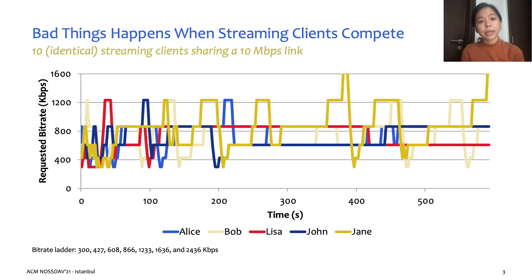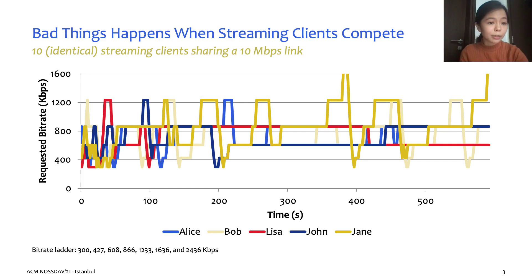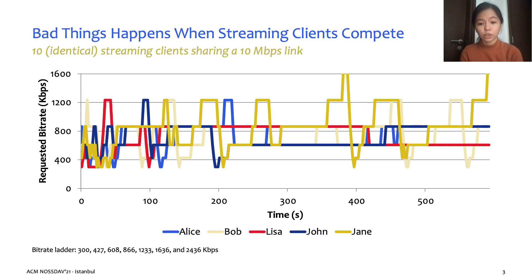This way, the network capacity will also be maximally utilized. However, as we can see from the graph, this is usually not what happens, as there will be frequent up-shifts and down-shifts, usually due to the complexities of the operating environment for each of the clients.